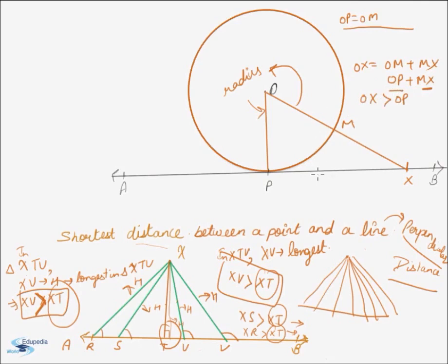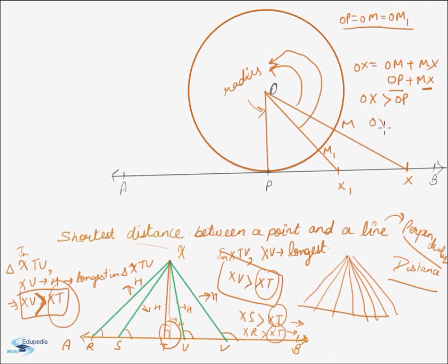Similarly, let us have a point X1 closer to P and join O with X1. Let the intersection point be M1. Clearly, OM1 is also the radius, so OP is equal to OM1. Now, OX1 equals OM1 plus M1X1, and OM1 equals OP. By the same reason, OX1 is also greater than OP, because M1X1 is an additional quantity being added to OP to get OX1.